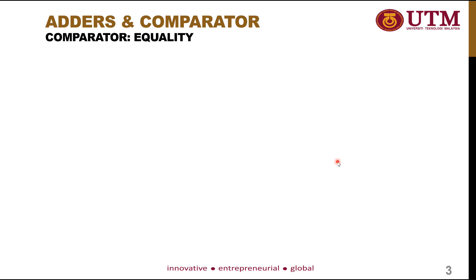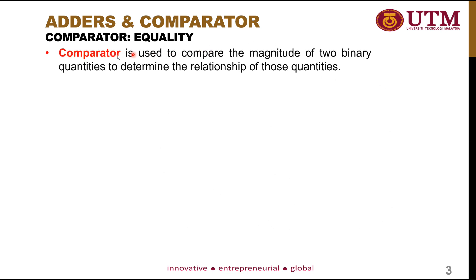This is the last part of Chapter 6, which is related to the Comparator. So what is a Comparator? A Comparator is used to compare the magnitude of two binary quantities to determine the relationship of those quantities. In our daily life, we always compare two different things. Similarly, the Comparator inside a digital circuit is generally used to compare two different variables — for example, equality, greater than, or less than.